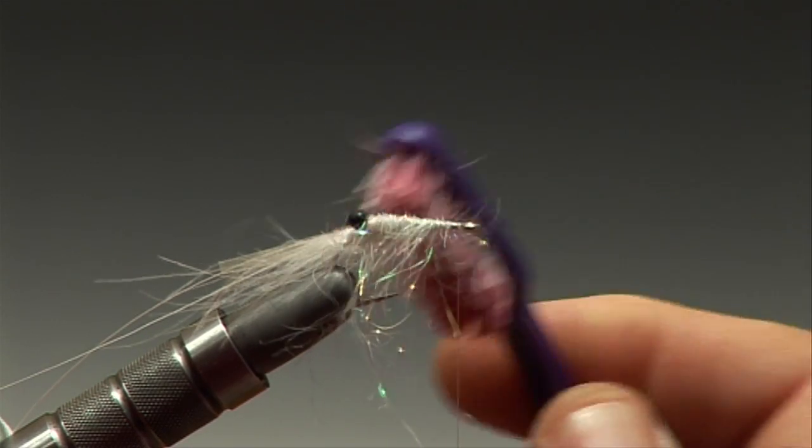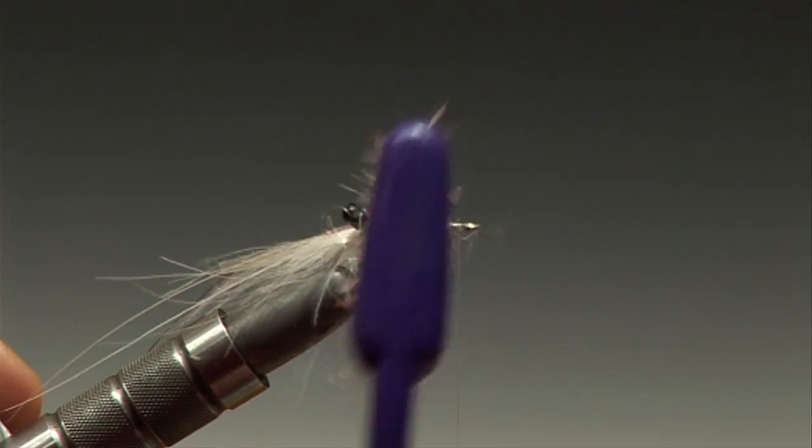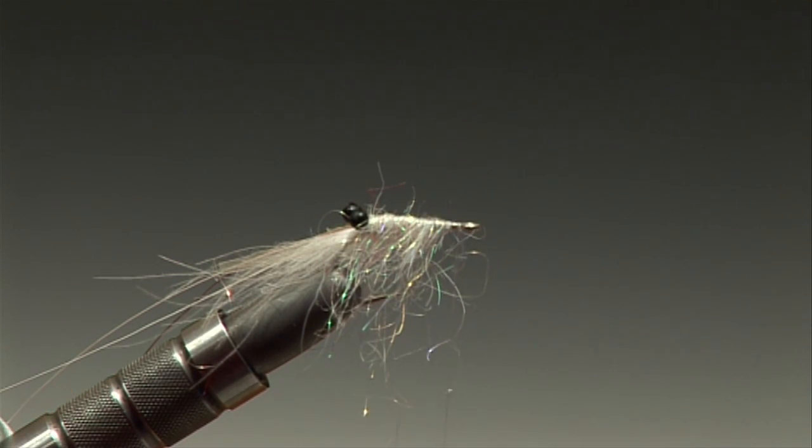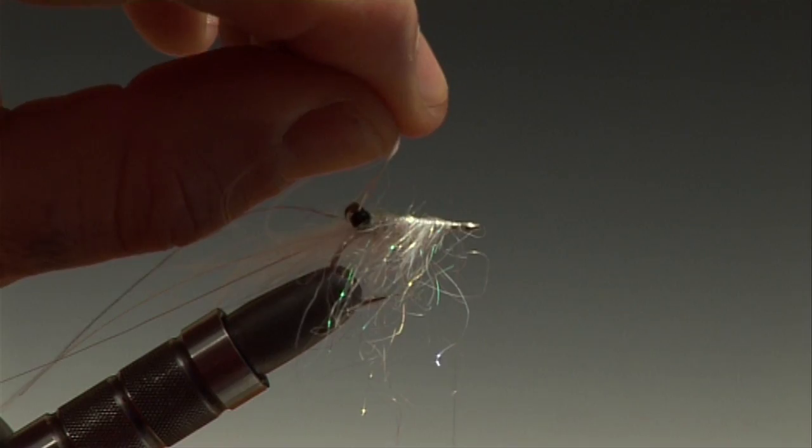Now with an old toothbrush just open up the fibers and get them all brushed the correct way. This will open up the back of the shrimp to give a good segmenting of the shellback.